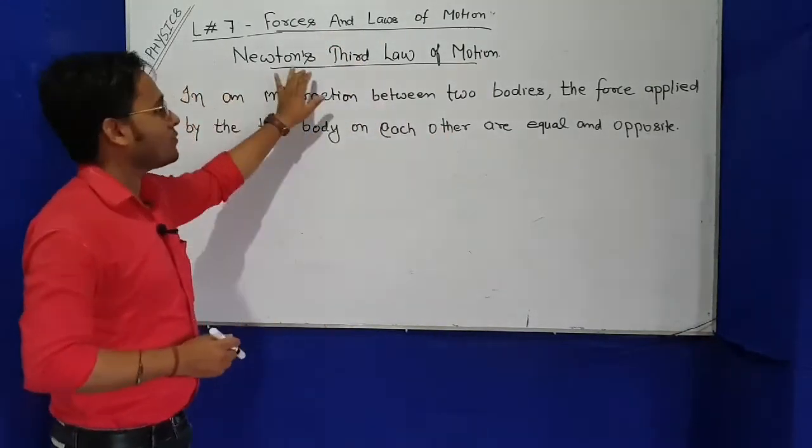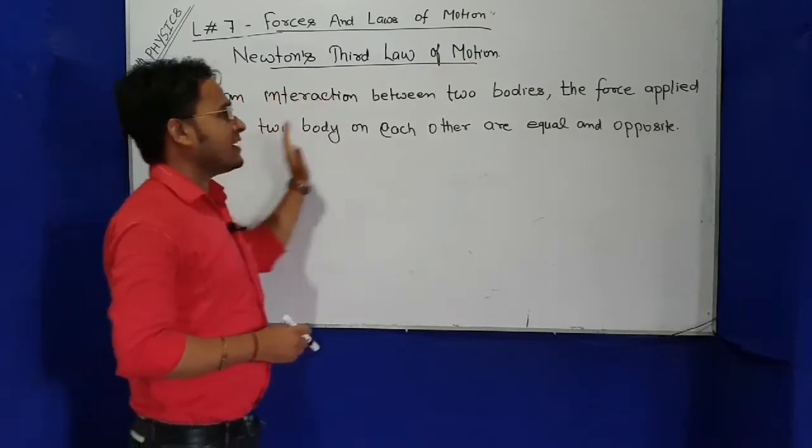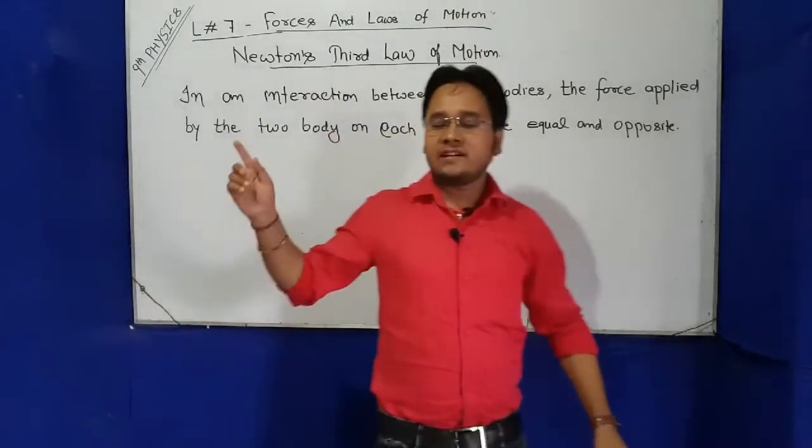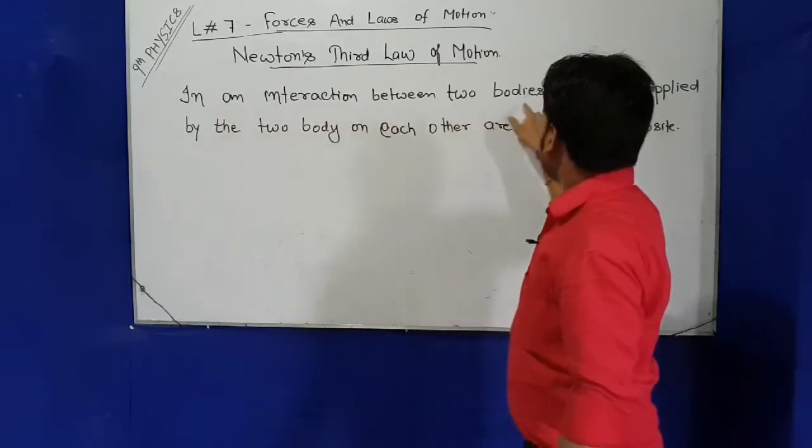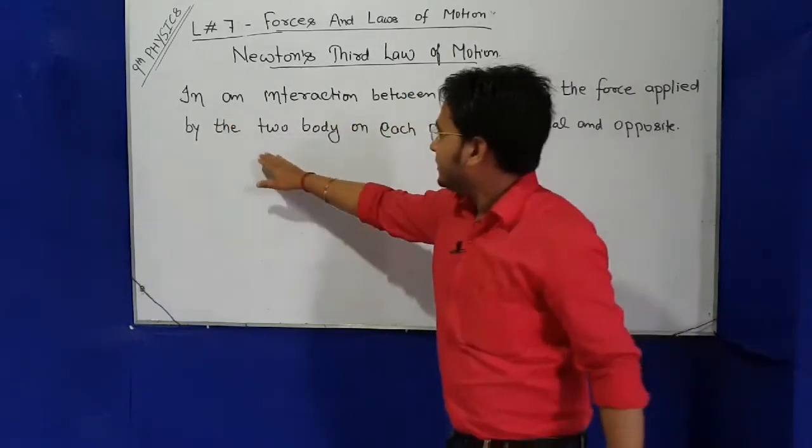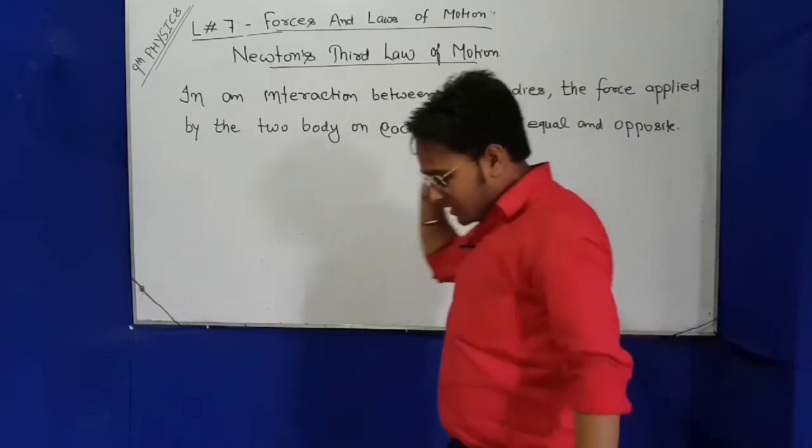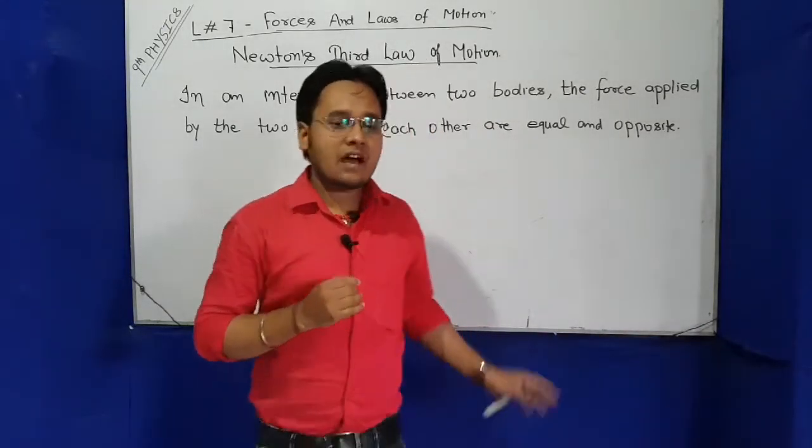So let us start Newton's third law of motion. As you see, I have already written the definition here. You can write it down. The definition is: in an interaction between two bodies, the force applied by the two bodies on each other are equal and opposite. So this is the definition of third law.